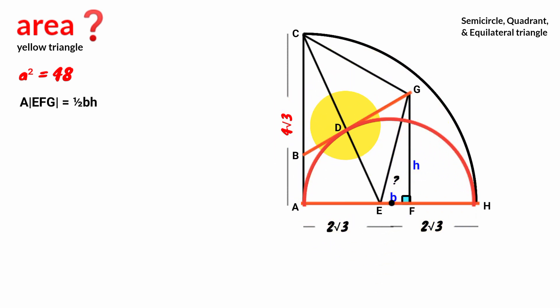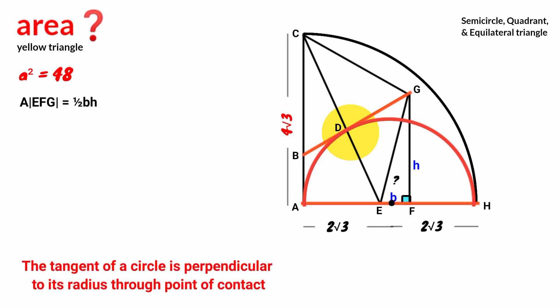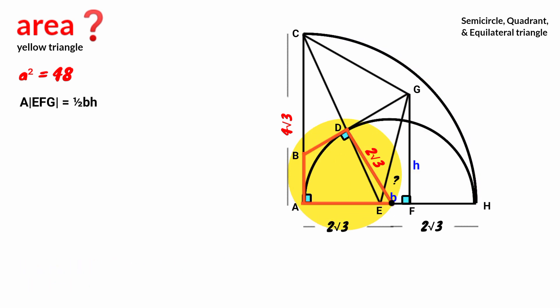This line BG is a tangent to the semicircle at this point. From circle theory, there is a rule that the tangent of a circle is perpendicular to its radius through the point of contact. So from the point of contact, if we draw a radius, the angle formed is going to be a right angle. The radius is 2 root 3 units. Now look at this quadrilateral ABDE. This angle and this angle are congruent and they are facing each other — that is, we have a pair of opposite equal angles. And we see this side and this are congruent, which is a pair of adjacent equal sides.